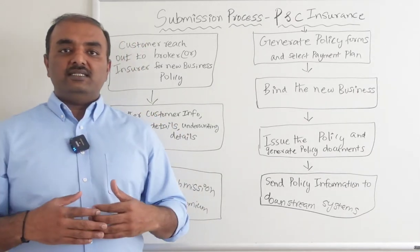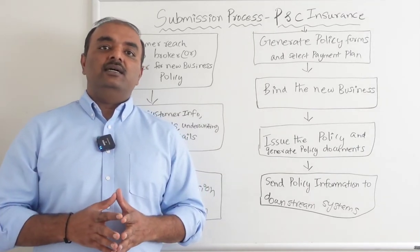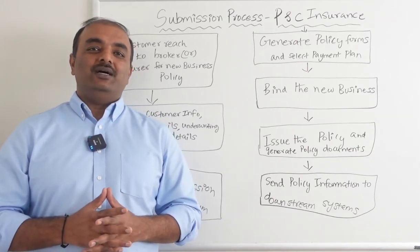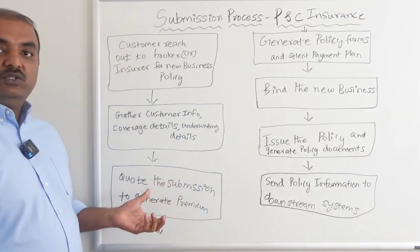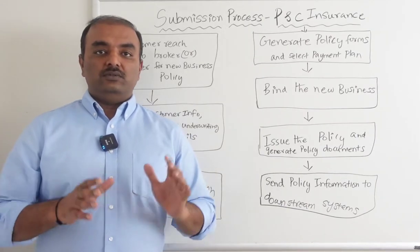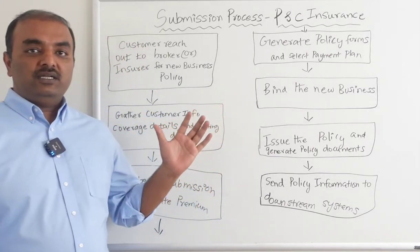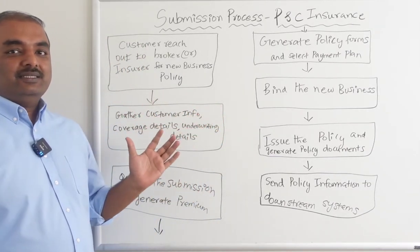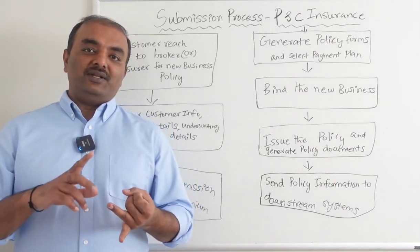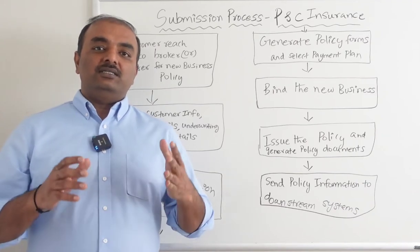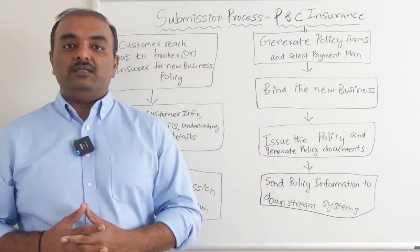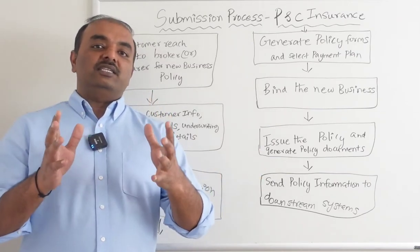Once you collect the details and determine this is not a high-risk profile, we can move forward and quote the policy. The insurance company quotes the submission to generate the premium. To recap: initially the customer reaches out to the broker or the insurance company, then the broker or insurance company gets details about the customer, their coverage needs, and specific underwriting details like past risk history or loss exposures.